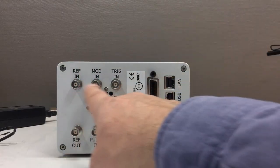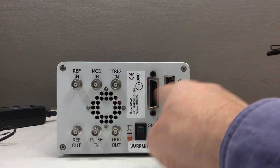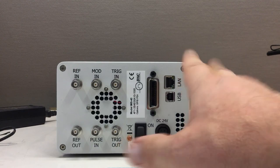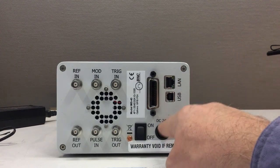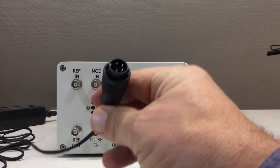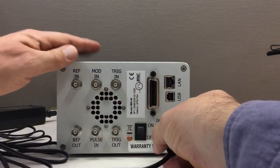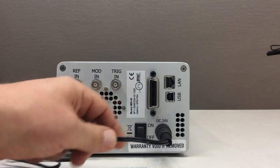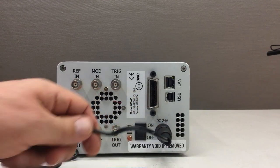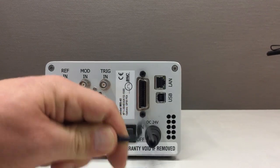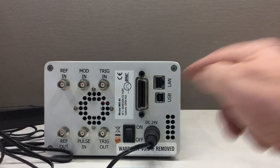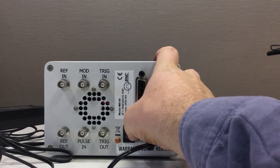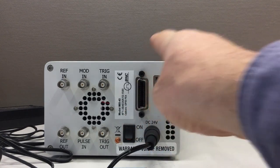The back has a whole slew of connectors and in due time we will talk about each and every one of them. For now, we're just interested in the power connector where the plug from the external power brick goes in and that's lockable so you cannot accidentally unplug the power. At the back you find also the power switch. We will put that on now and go back to the front.